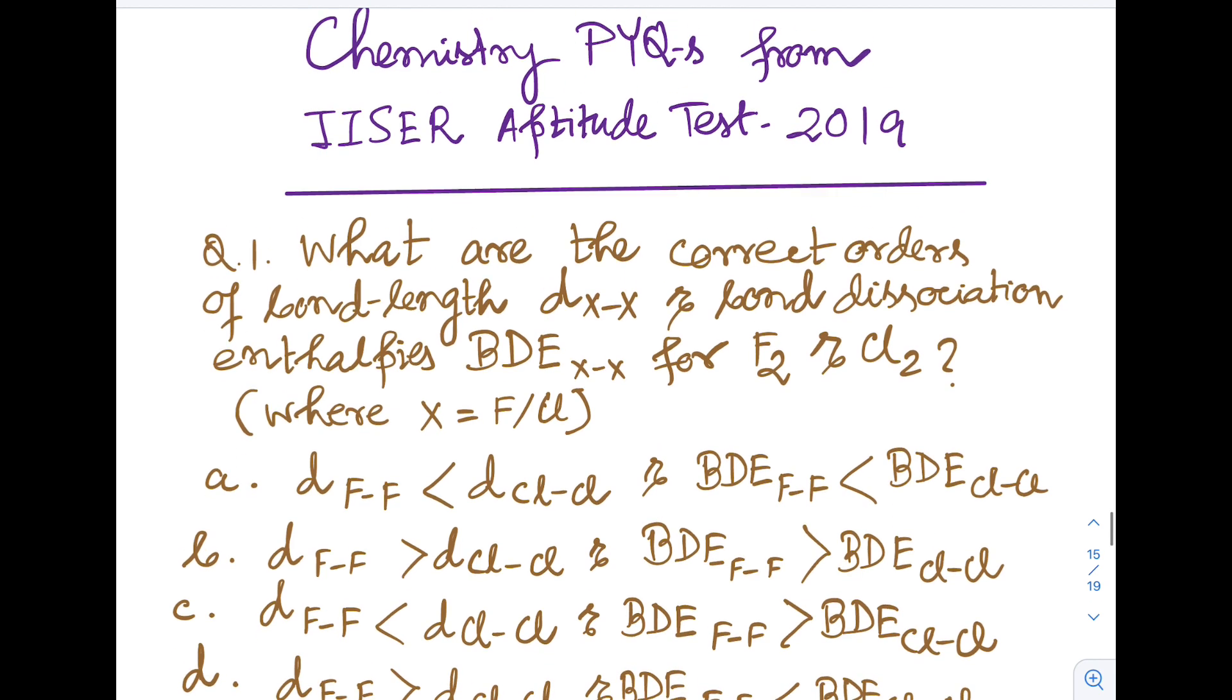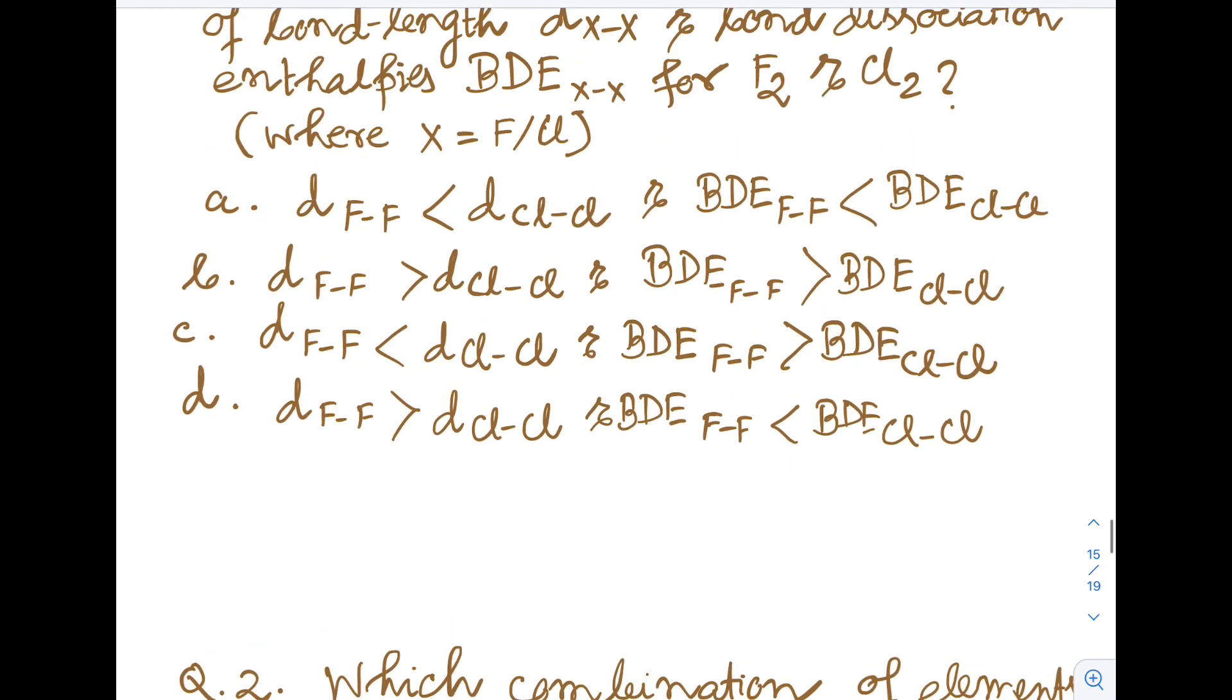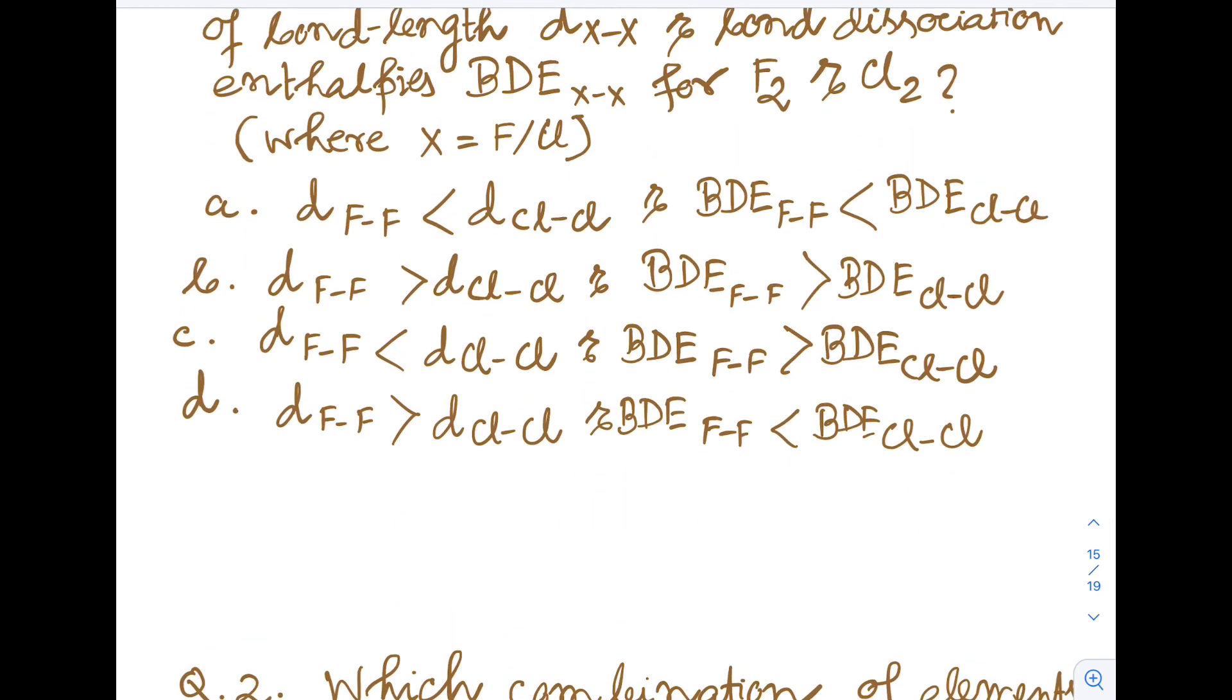Let's begin with question 1. What are the correct orders of bond length d_XX and bond dissociation enthalpies BDE of XX for F2 and Cl2, where X equals fluorine and chlorine?